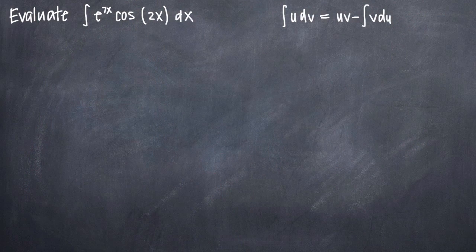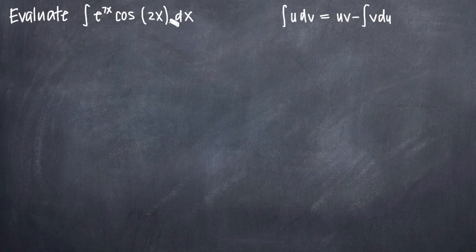In this particular video, we've been asked to evaluate the integral of e to the 7x times cosine of 2x dx. Since this is an integration by parts problem, the first thing we need to do is identify a value for u and a value for dv. The integration by parts formula tells us that the integral of u times dv equals u times v minus the integral of v times du, and the left-hand side represents the integral we're taking here.